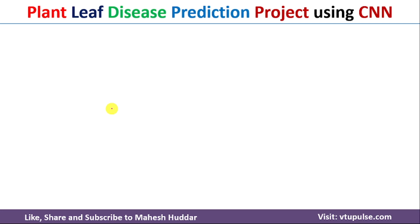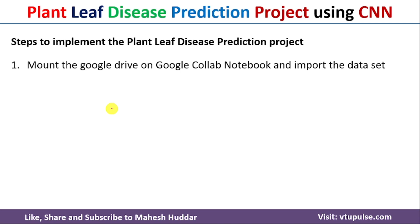To implement the plant-leaf disease prediction project, we need to follow these steps. The first step is to mount Google Drive on Google Colab and then import the dataset. I want to implement the project on Google Colab, so I need to place all my datasets on Google Drive and import from there. If you are using a standalone machine, this particular step is not required.